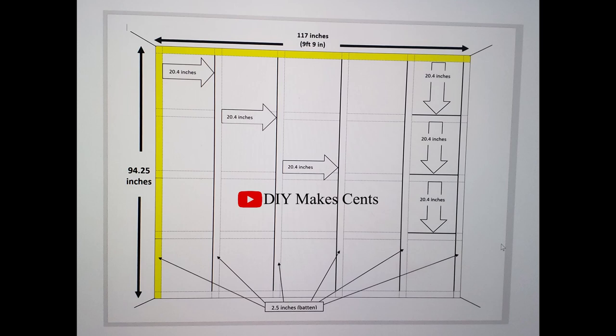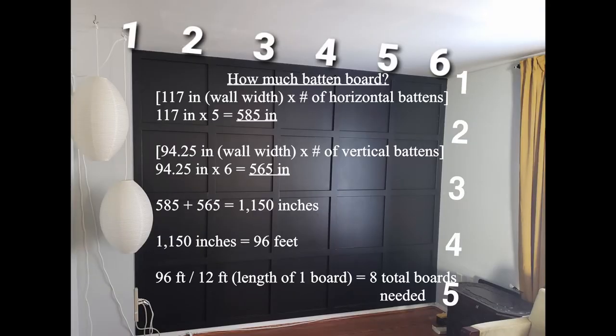All right now after all my measurements were done and I had my grid all mapped out on the wall I had to figure out how much batten board that I needed. So in order to do that I multiplied the width of my wall times the number of horizontal boards. I also multiplied the height of my wall times the number of vertical boards. I totaled that together and at this point this is where you need to convert everything over to feet.